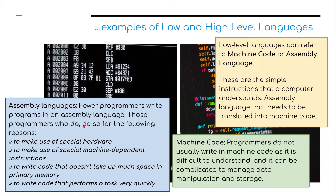Fewer programmers write programs in assembly language. Those who do, do so for the following reasons: to make use of special hardware, to make use of special machine-dependent instructions, to write code that doesn't take up much space in primary memory, and to write code that performs a task very quickly. Here we have an example of assembly language.